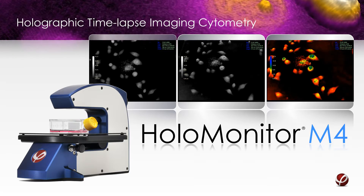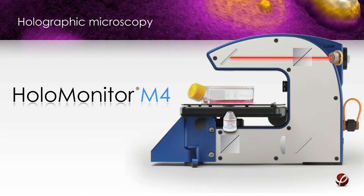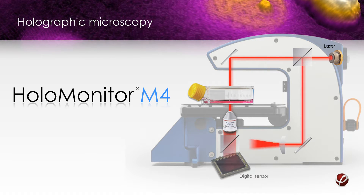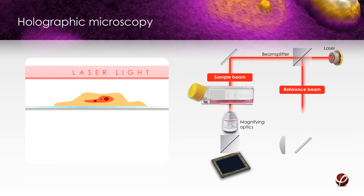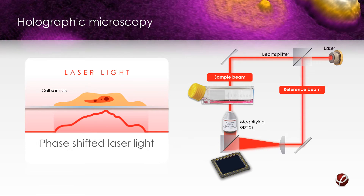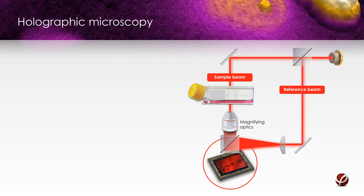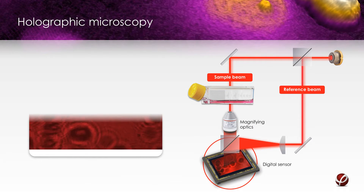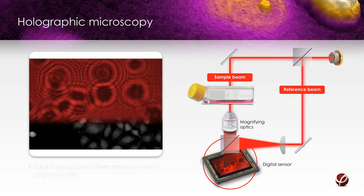HoloMonitor M4 utilizes the principle of holographic microscopy. A low-power laser beam is split into two beams, one illuminating the sample and the other providing a reference beam. Laser light passing through the sample is affected by intracellular structures, causing a phase shift of the illuminating light. Once combined, the two beams create an interference pattern that is recorded by a digital image sensor. The interference pattern is then processed computationally to produce a holographic image.